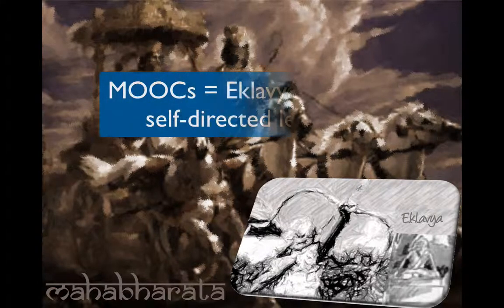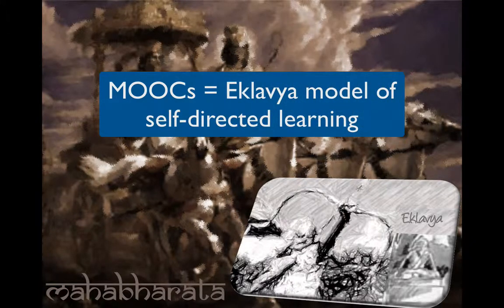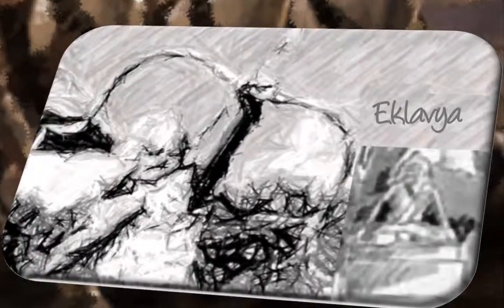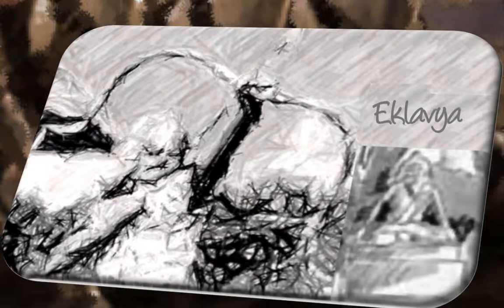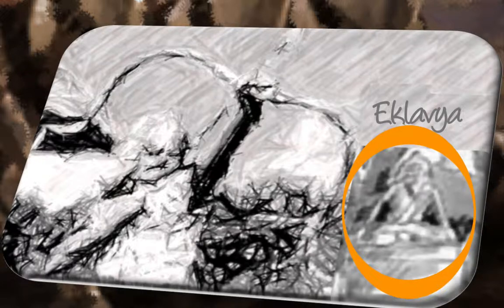MOOCs seem to be the foundation of the disruption that is emerging in education, which I would describe as the Eklavya model of self-directed learning. In the Indian epic Mahabharata, Eklavya is a tribal prince who aspires to learn archery but is not taken as a student by the famous teacher Dronacharya because he is not of the right lineage. So Eklavya sculpts a clay statue of the teacher and embarks on a journey of self-learning. MOOCs, taught by people who are best in the field, are like virtual Dronacharyas today, who are there to guide and facilitate anyone who is passionate about learning.